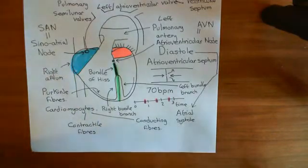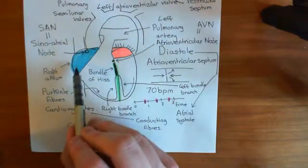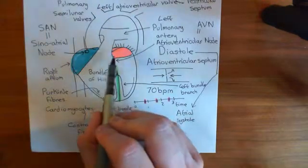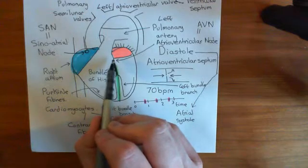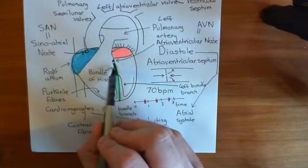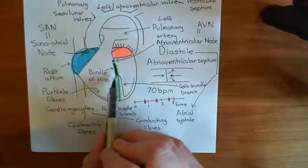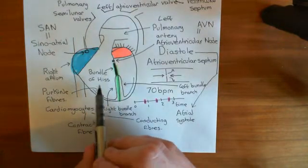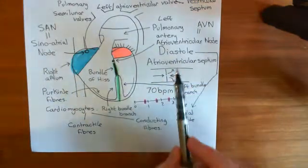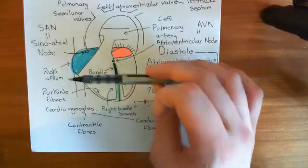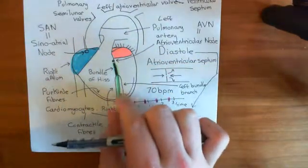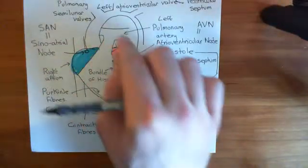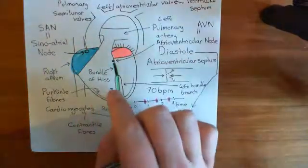To summarize: the sinoatrial node begins the action potential, which propagates down the atria causing atrial systole. Then it reaches the atrioventricular node, where it conducts very slowly. Then it goes down the bundle of His, splits into the right and left bundle branches, and passes to the Purkinje fibres. These cause a spreading action potential in the contractile cardiomyocytes from the base of the ventricles upward, causing ventricular systole.